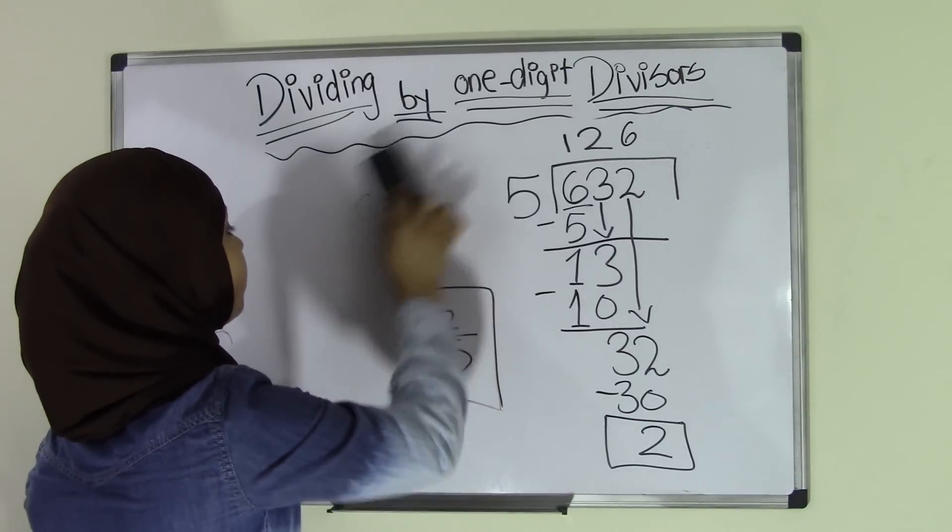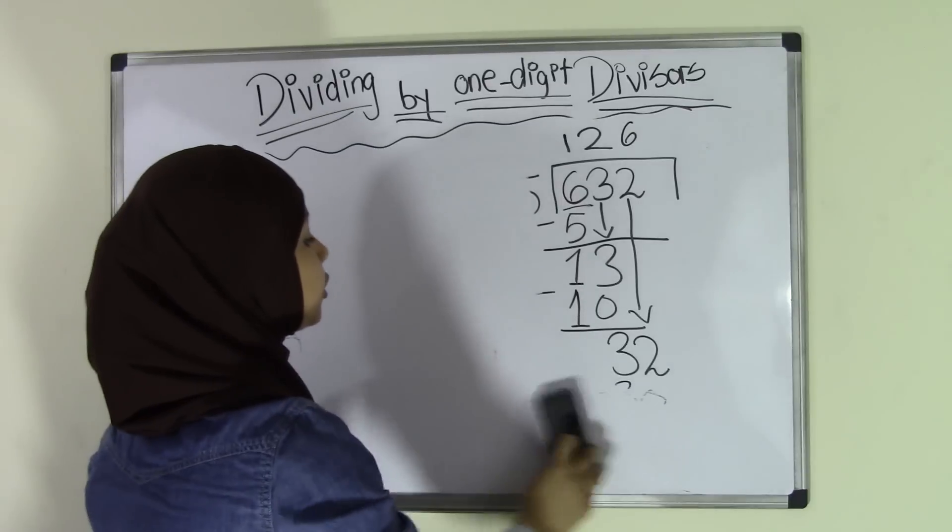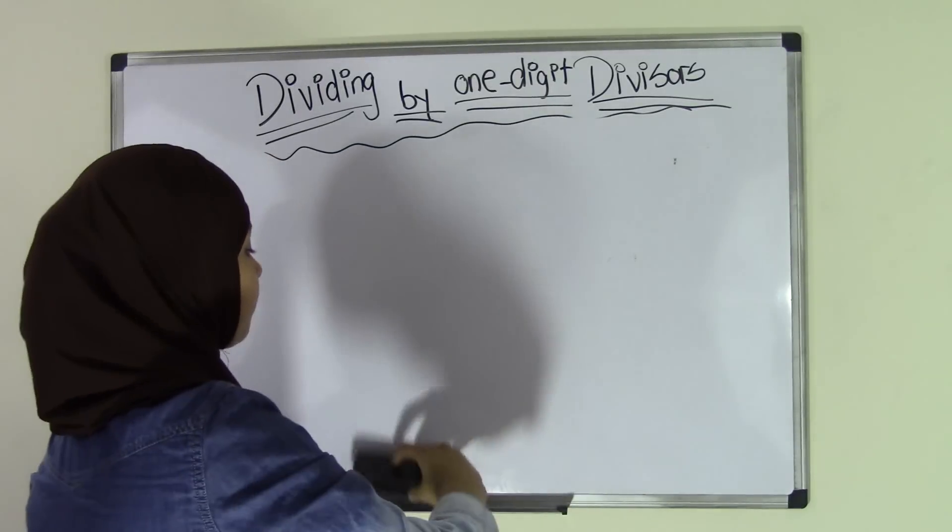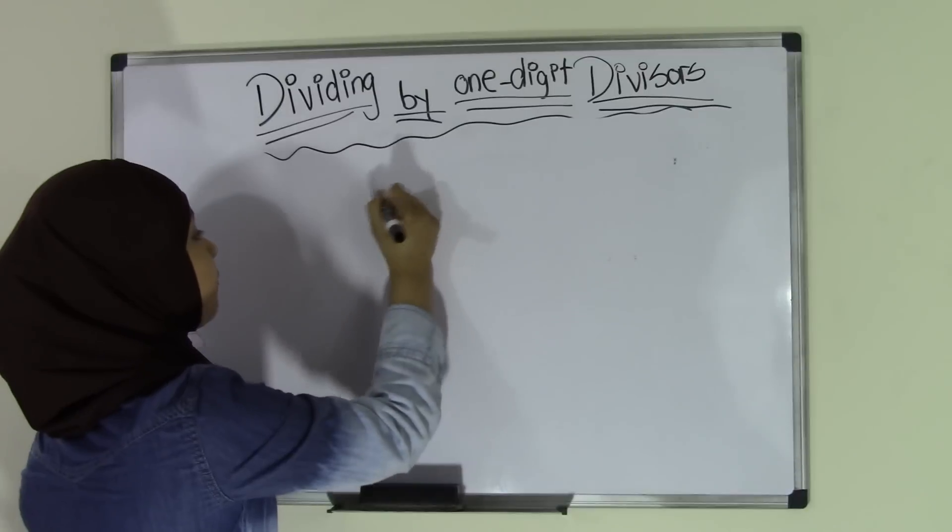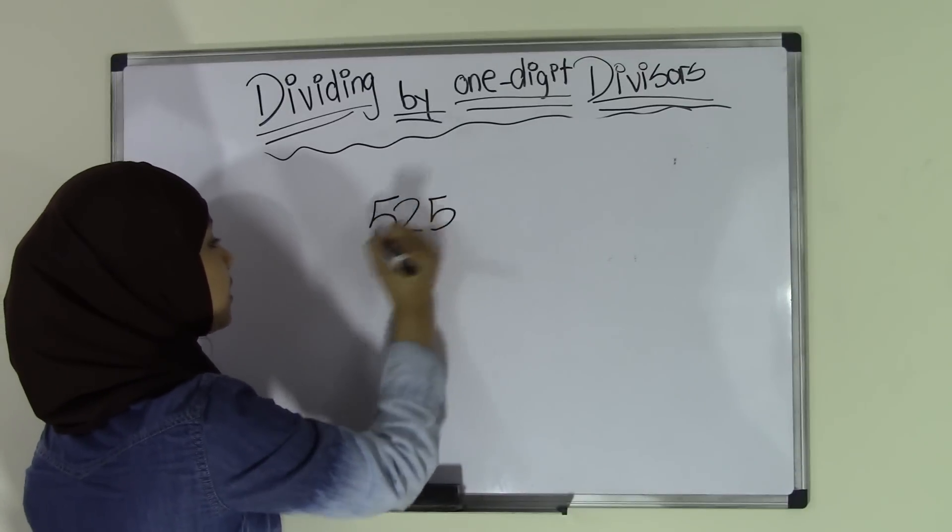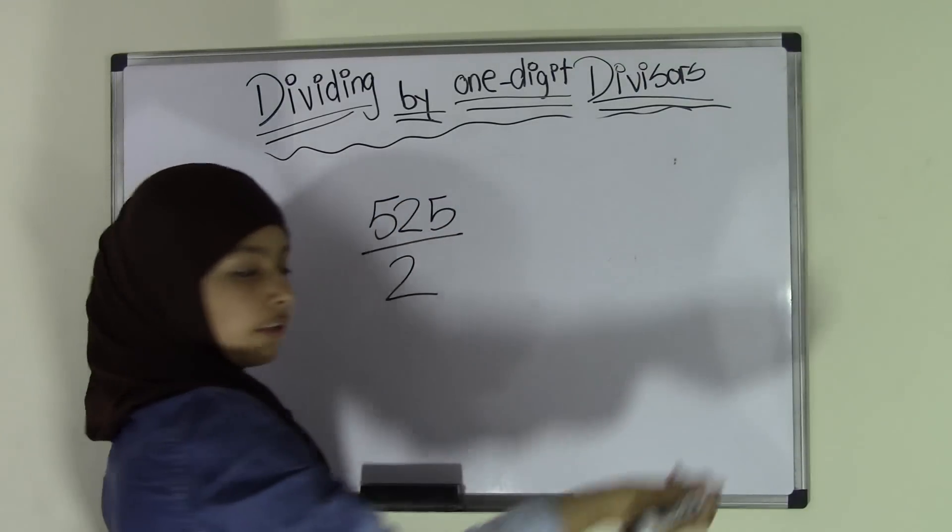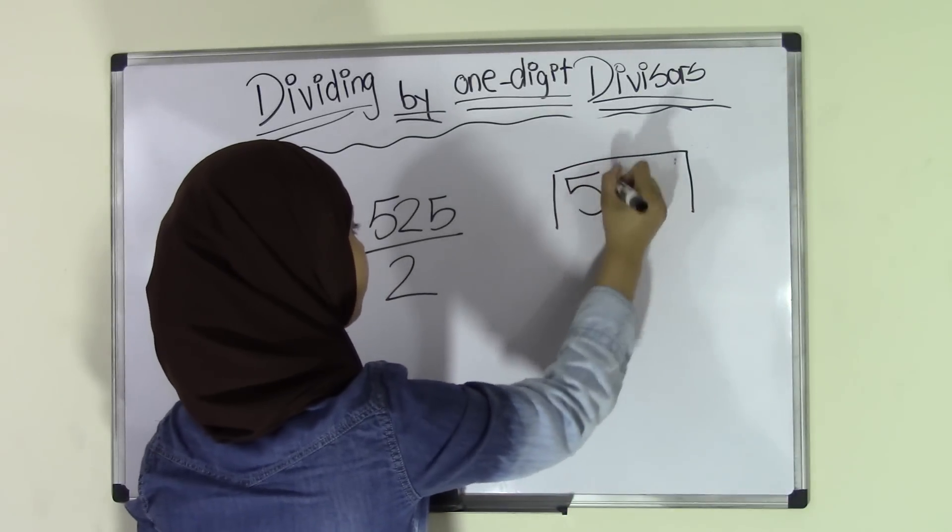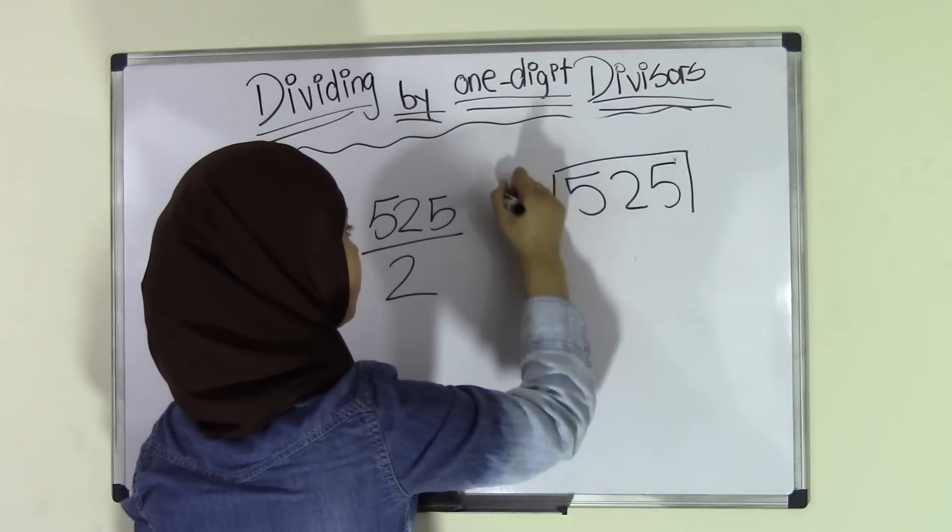Let's take a look at another example in which we can convert the improper fraction to a decimal, so that way we will not have a remainder left. Let's say we have 525 divided by 2. First thing we're going to do here is we're going to write 525, so 525 and 2 here.